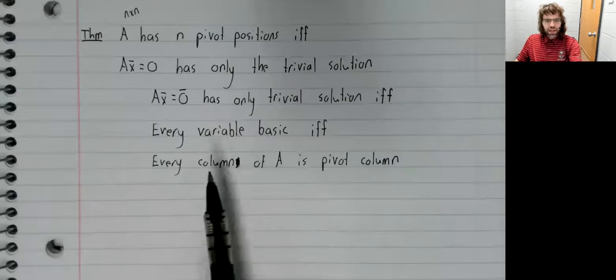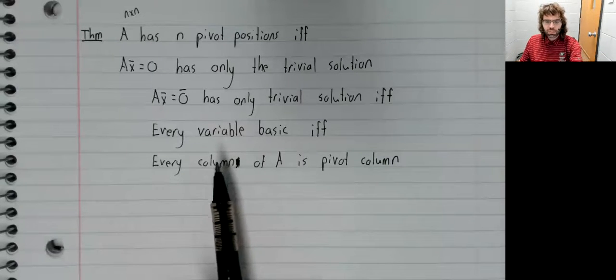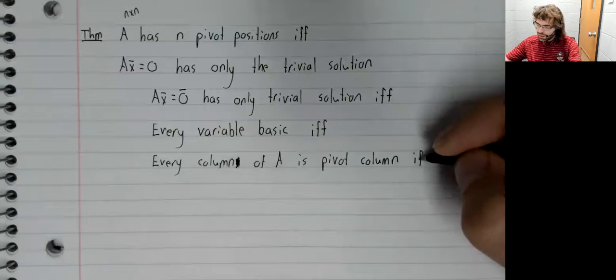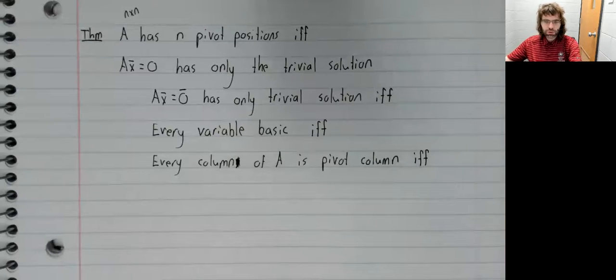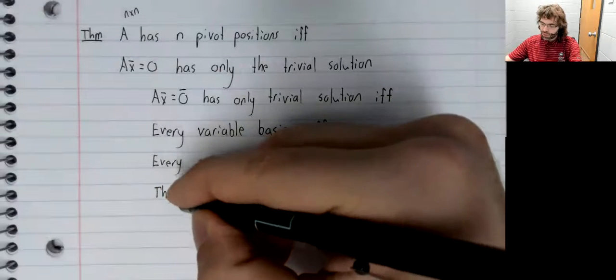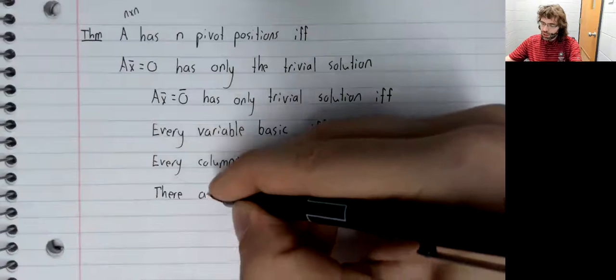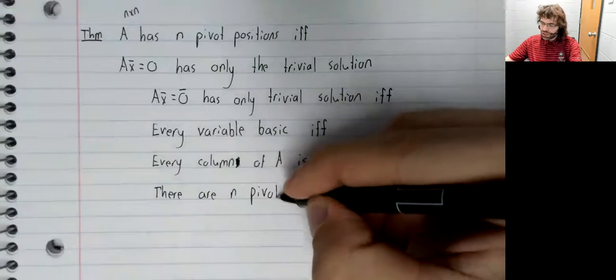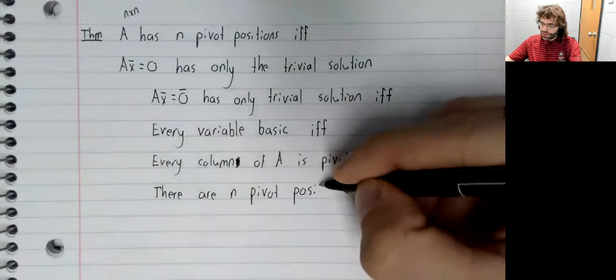And A has n columns. Every column is a pivot column if and only if every column contains a pivot position, if and only if there are n pivot positions.